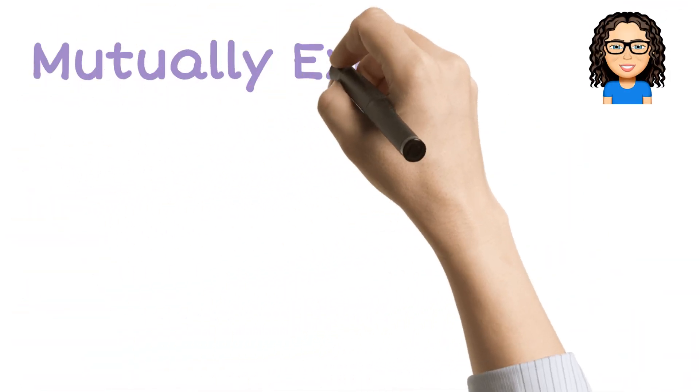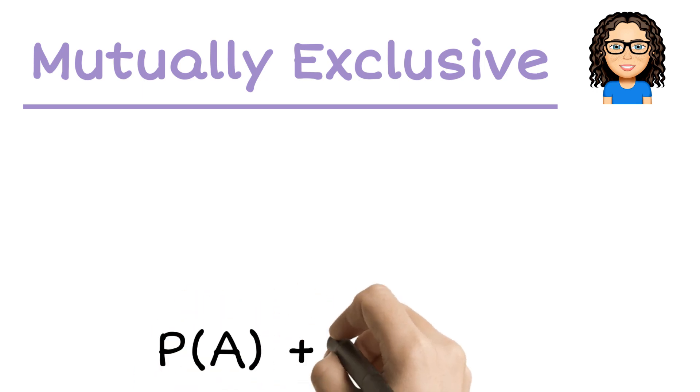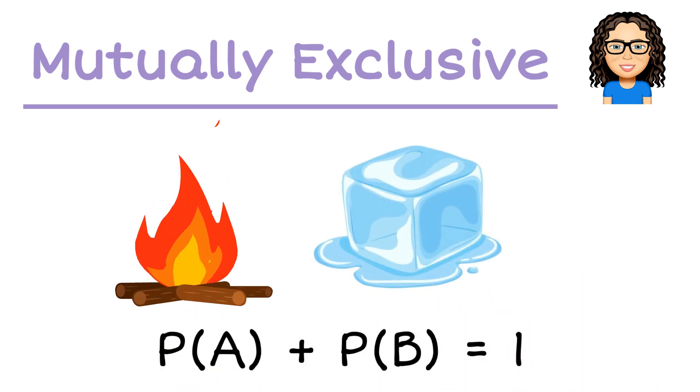If I talk about mutually exclusive events, that is talking about events that are the opposite of each other. So hot and cold are opposite, there are no other options.